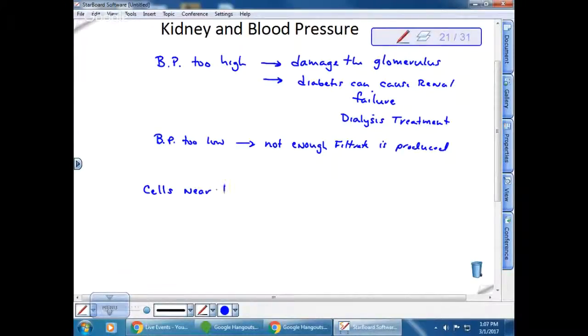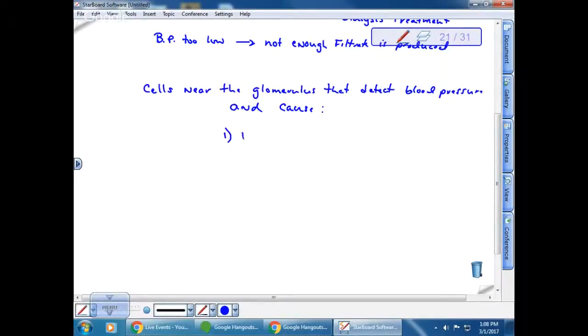There's cells near the kidney, actually near the glomerulus, that detect blood pressure. They actually have little receptors that can detect the pressure of the blood on the blood vessel, and they cause two things to happen. The first thing is that a chemical called renin is released into the blood. Renin is an enzyme.